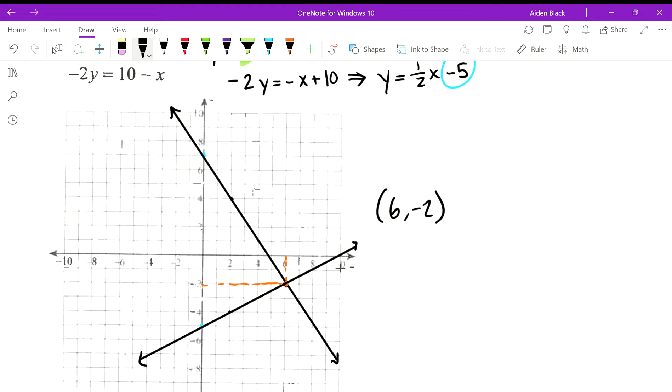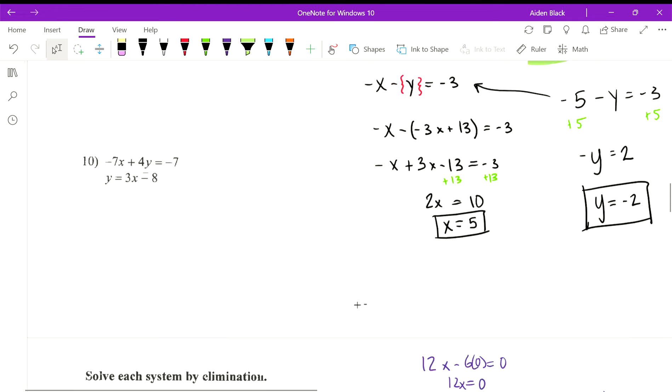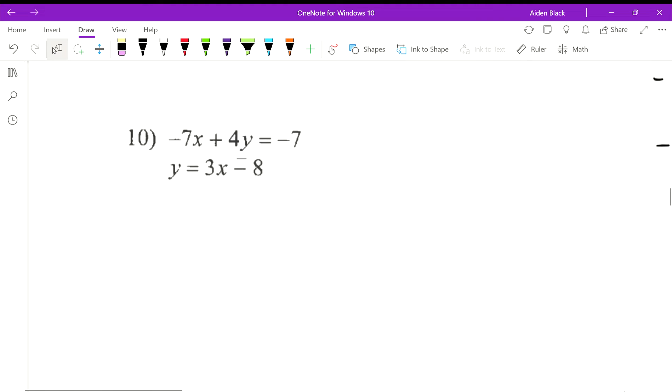So where is our intersection located? It is at 6 comma negative 2. Okay, so that was solving by graphing. We'll do a substitution problem.